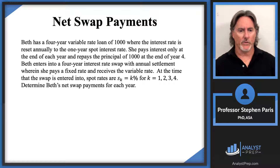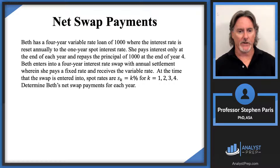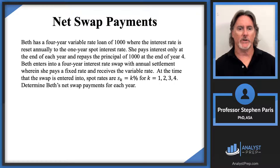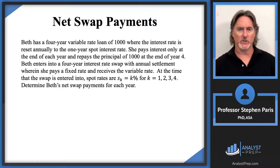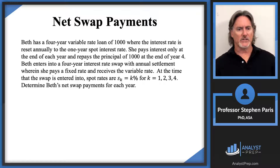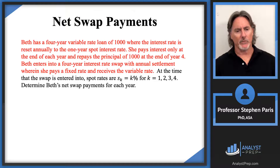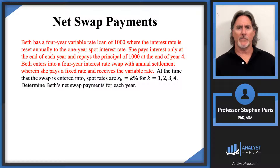Beth enters into a four-year interest rate swap with annual settlement wherein she pays a fixed rate and receives the variable rate. At the time the swap is entered into, spot rates are: the one-year spot rate is 1%, the two-year spot rate is 2%, and so forth. We're asked to determine Beth's net swap payments for each year. The wordy part of the problem is describing an interest rate swap.